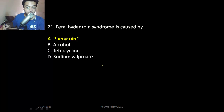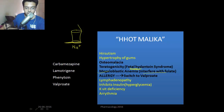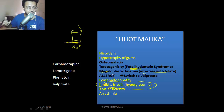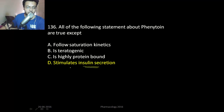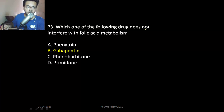All of the following statements about phenytoin are true except: it stimulates insulin secretion — that is false. Phenytoin actually inhibits insulin secretion and can cause hyperglycemia. Which drug does not interfere with folic acid metabolism? Gabapentin does not interfere. It is barbiturates like phenobarbitone and primidone, and phenytoin, that interfere with folic acid metabolism.